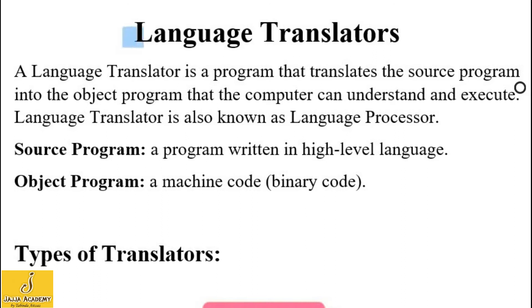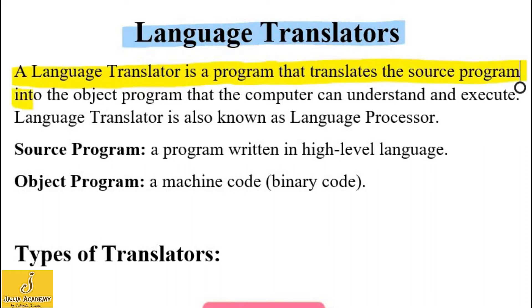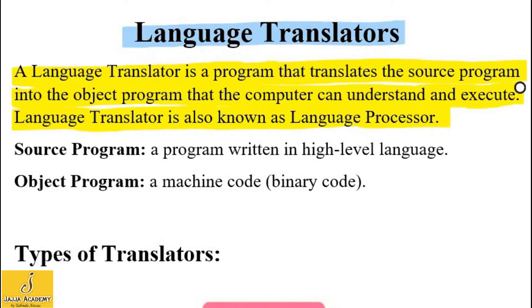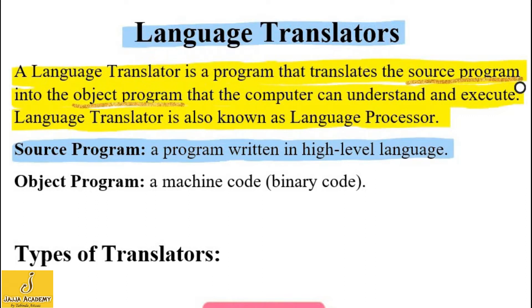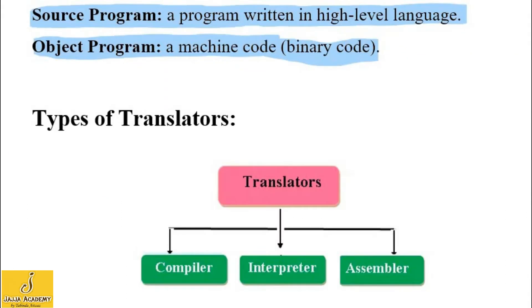A language translator is a program — that is, a software — that translates the source program into the object program that the computer can understand and execute. A language translator is also known as a language processor. There are two important terms in the definition: source program and object program. A source program is a program written in high-level language. An object program is machine code — a binary code written in binary language — that is directly understandable by the computer and can be executed by it. So a language translator converts source program into object program.